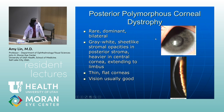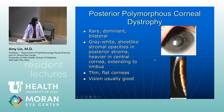On the slit lamp photo, you can see a little opacity posteriorly. Patients have thinner and flatter corneas, but vision is usually good. Most patients with this condition will have good vision and won't even know they have it.